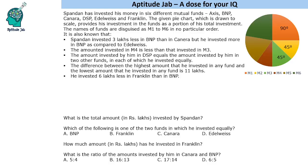Hello everyone, welcome to Aptitude Lab. This set is based on a pie chart. It says that Spandan has invested his money in six different mutual funds, and this pie chart is drawn to scale. So if you find that one portion is bigger than another, that value will be bigger. The names of the funds are disguised as M1 to M6.